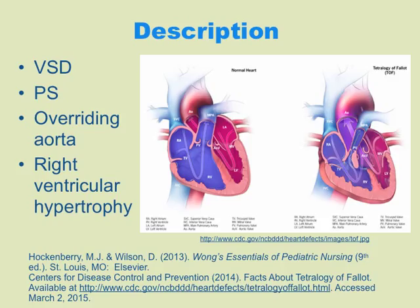The last disorder is right ventricular hypertrophy. You can see that the right ventricle wall is actually thickened, and that causes the ventricle to have a smaller amount of space for blood to accumulate. So those are your four disorders.